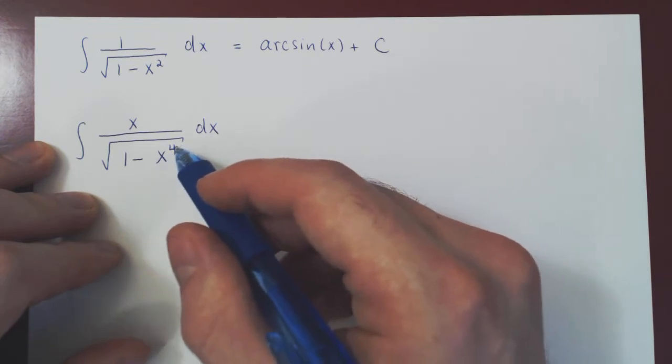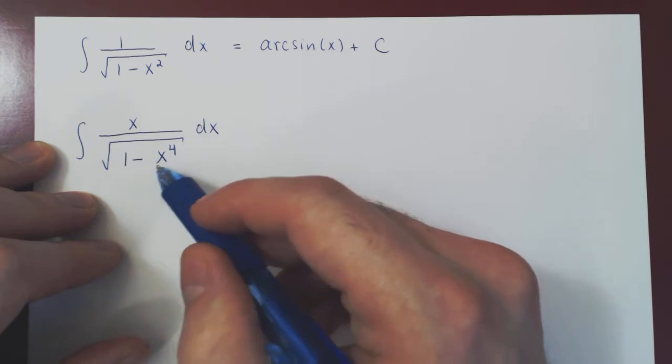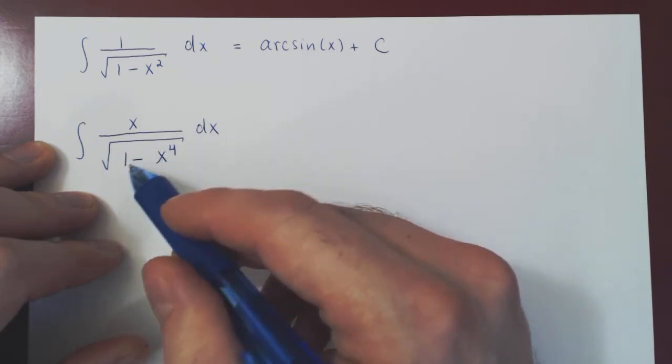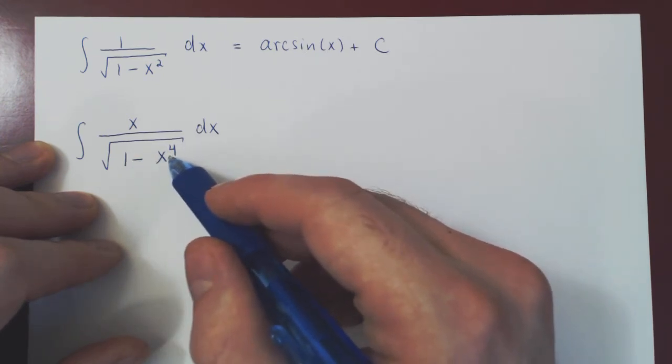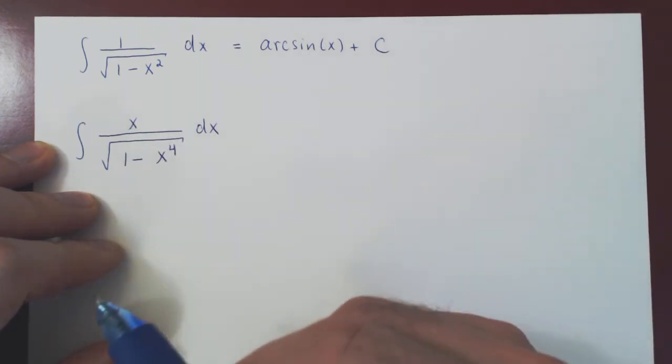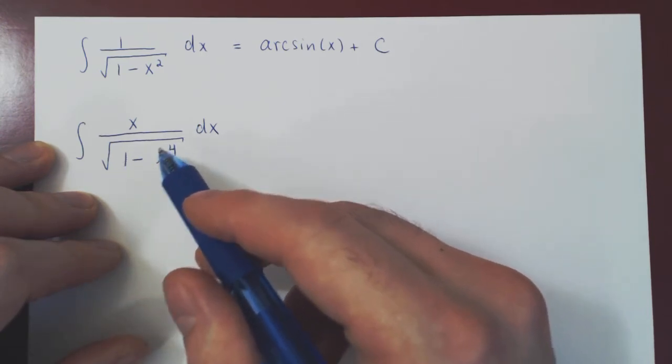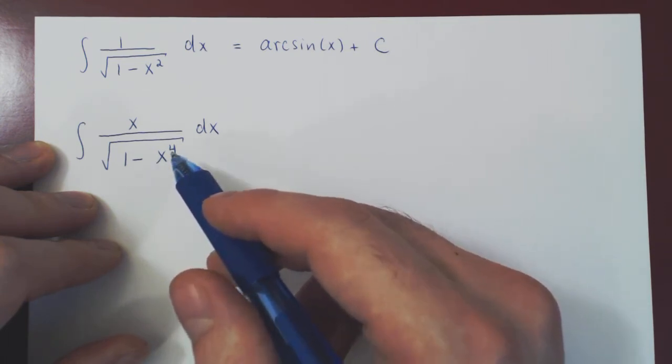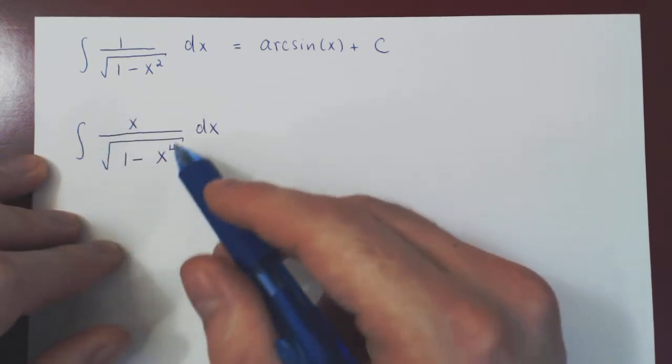If this was not x to the 4th power but x squared, then you would have 1 minus u squared, the derivative of which would be negative 2x—1 minus x squared, sorry, the derivative of which would be minus 2x. Up to negative 2, it would just be x, and this would be a rather simple u-substitution. But here, the derivative of 1 minus x to the 4th is negative 4x cubed, and what we have on top is not an x cubed but a simple x. So it seems that we're kind of stuck here.